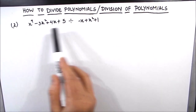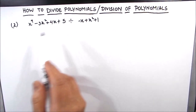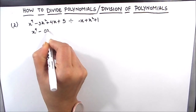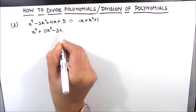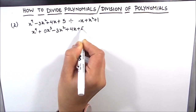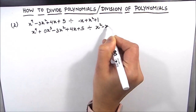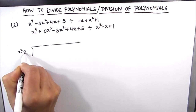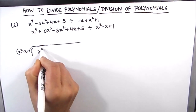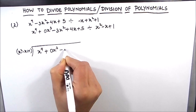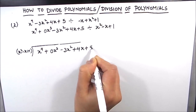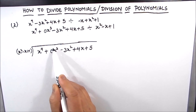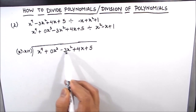Now for our second example. We first apply step one: arrange terms in decreasing order of their degrees. We have x to the power 4, there is no x cubed term, so we write it as 0x cubed, giving us x to the power 4 plus 0x cubed minus 3x squared plus 4x plus 5, divided by x squared minus x plus 1. We write 0x cubed so it is easy to see the decreasing order.